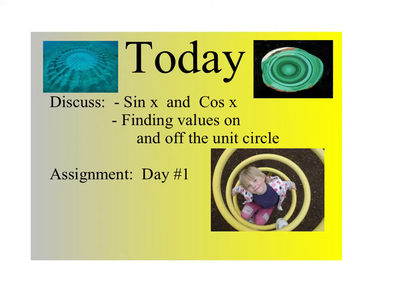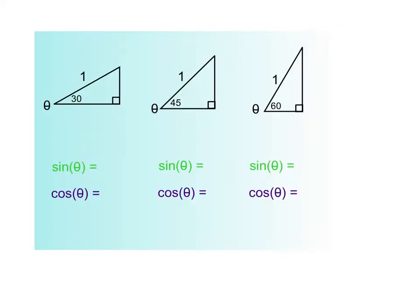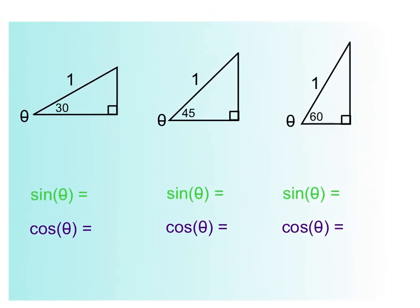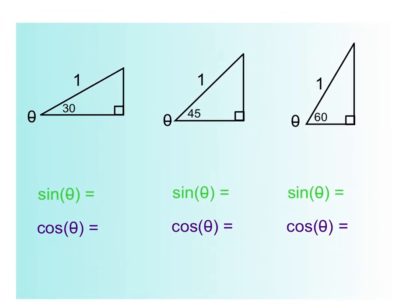Today we are doing our first day of what I would call the unit circle, or another way to say it is circle trig. It really is about sine and cosine — finding them not just for 30s, 60s, and 45s, but finding them on a circle. Let's make sure you really understand this. You're used to these numbers being 1, 2, and the square root of 3.